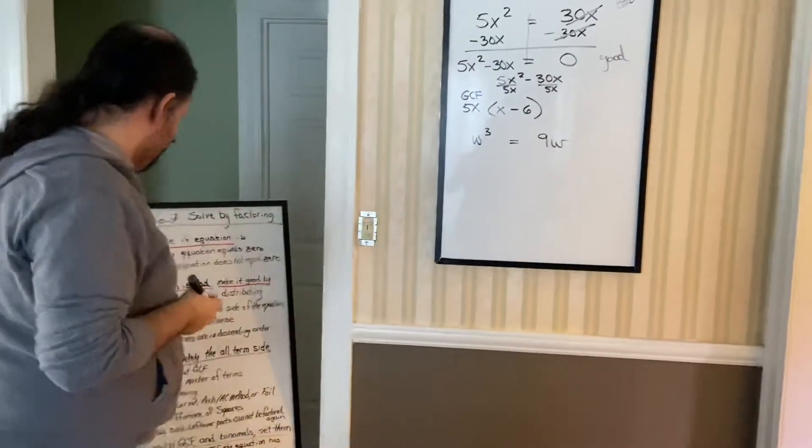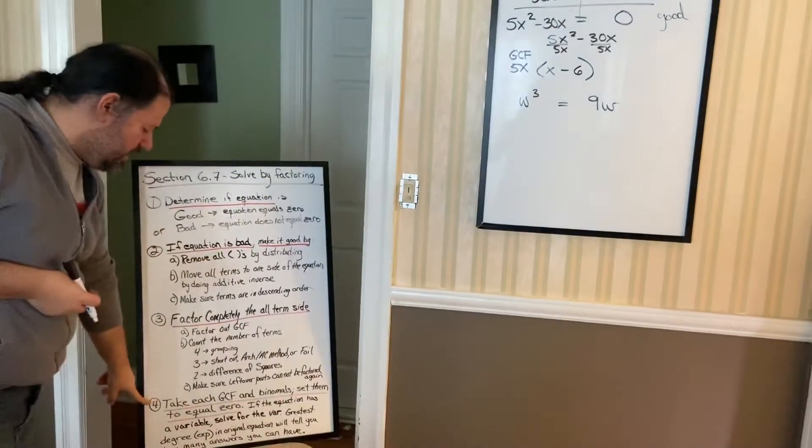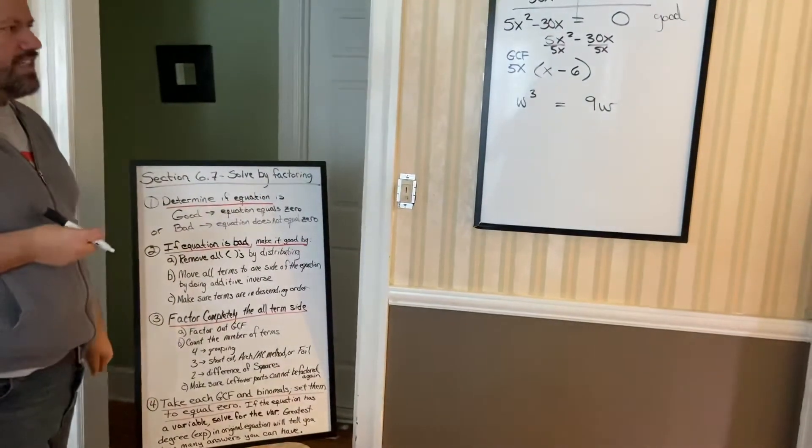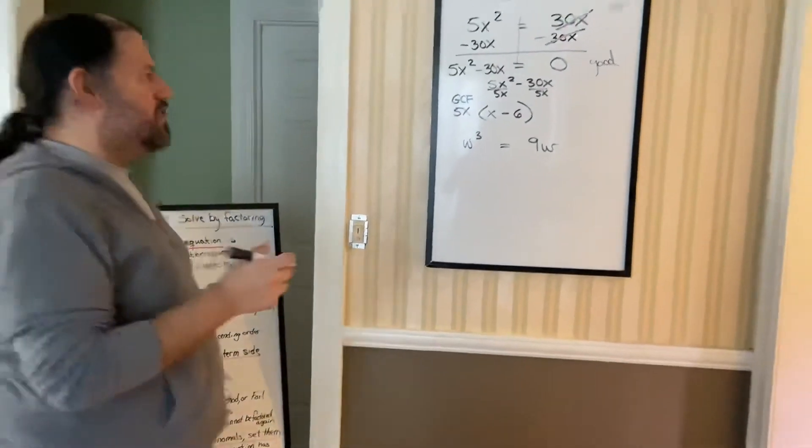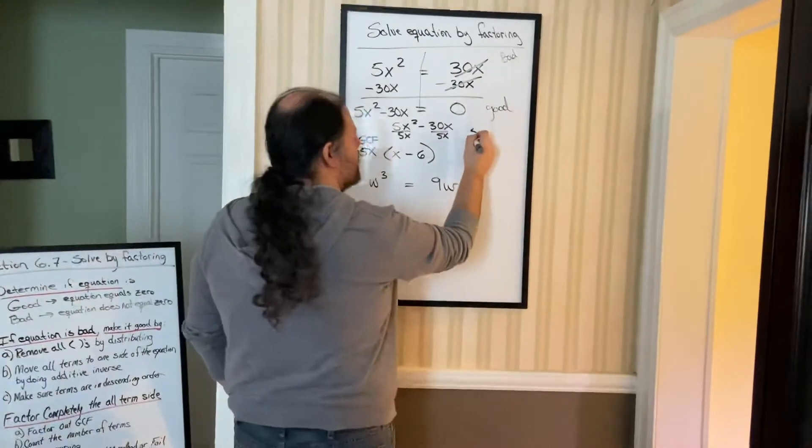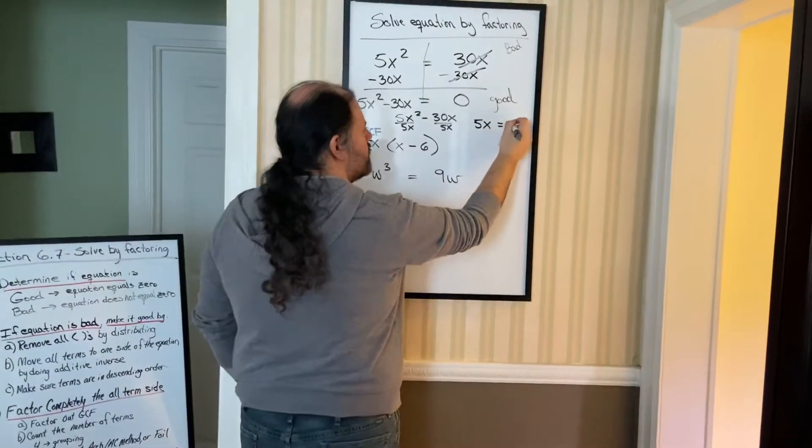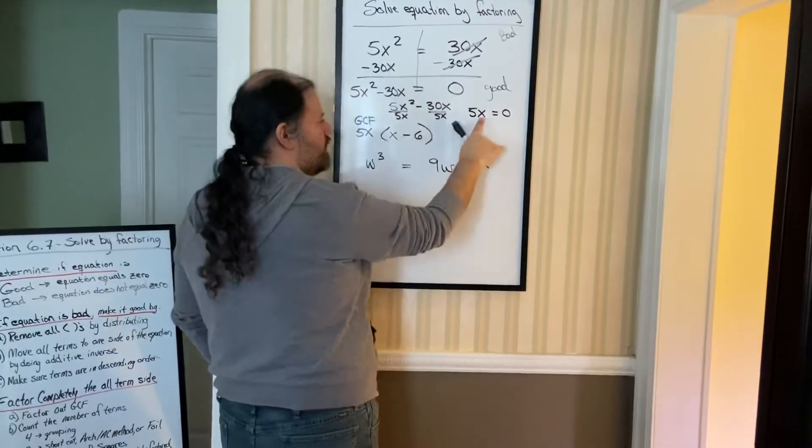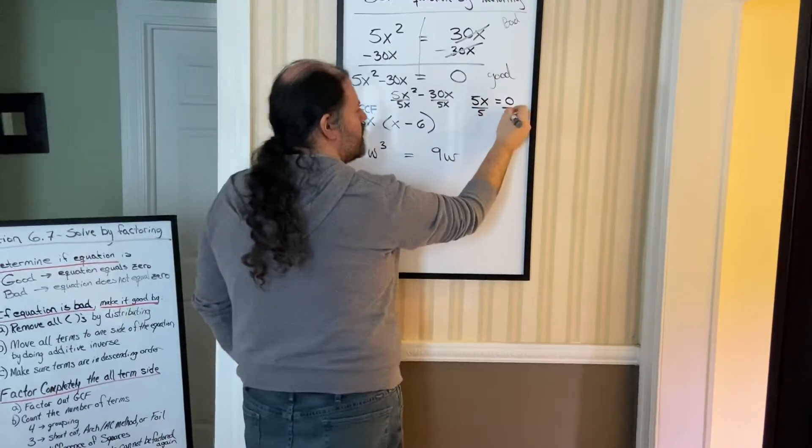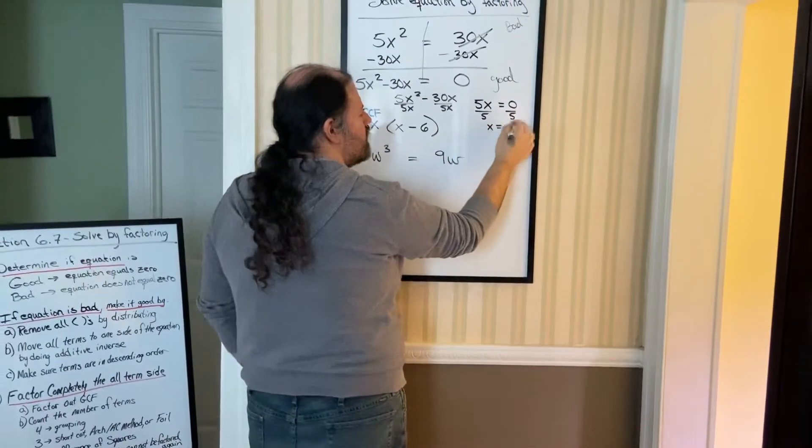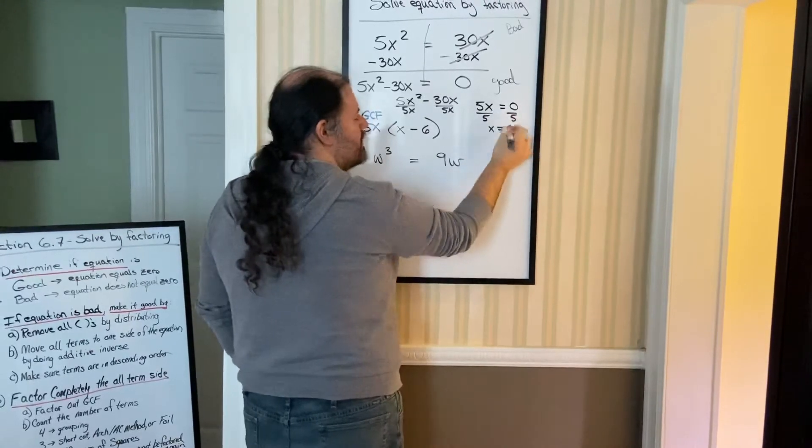So once you factor completely, then that's where we take each of those terms, the GCF and the binomial, the set of parentheses. So take the 5x, set it equal to 0. That's the GCF. Since it has a letter, solve for it. Divide each side by 5. You know that 0 divided by 5 is 0.